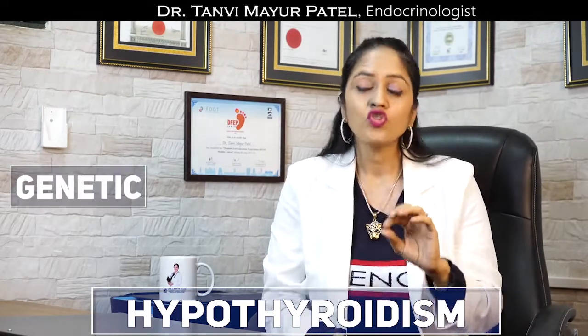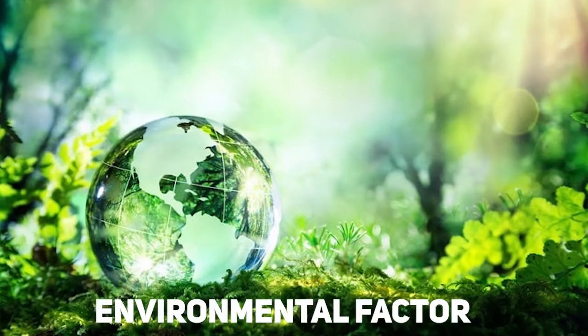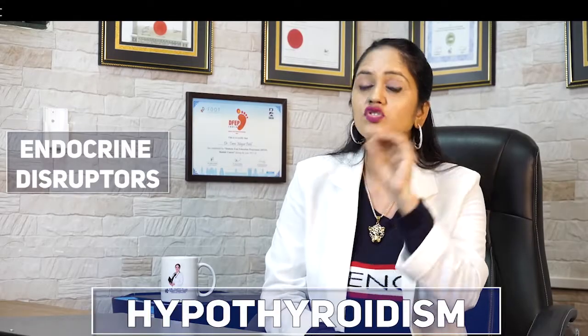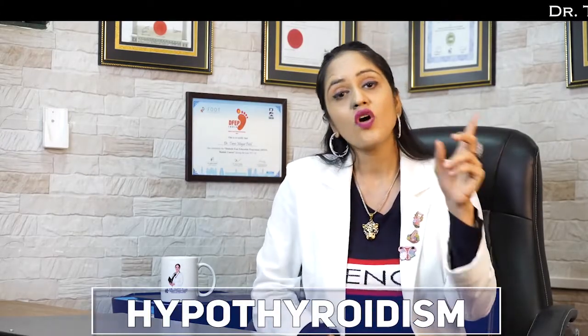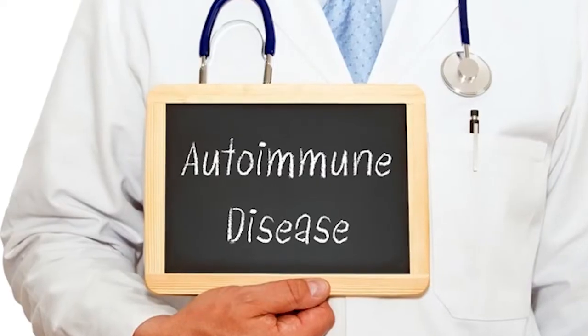Now what is causing this immune system to trigger? There are plenty of reasons. One such reason is genetic — if any of your family members has a thyroid problem, you have a higher chance of developing thyroid problems. The second important reason is environmental factors, which work like a trigger and stimulate the immune system, causing autoimmune health problems. These environmental triggers are called endocrine disruptors, and I have made a special video about that. So the first common condition is Hashimoto's disease due to autoimmune condition.